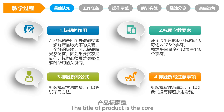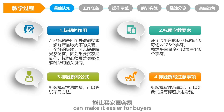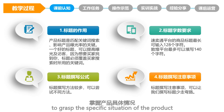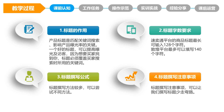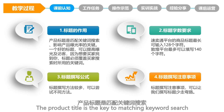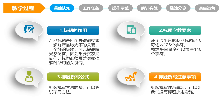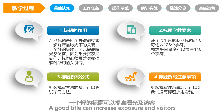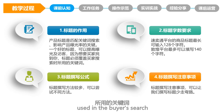The title of products is the core concentration of information content. A title that is articulated and contains key information can make it easier for buyers to grasp the specific situation of the product, thus arousing more interest from buyers. The product title is the key to matching keyword search and affecting product exposure. A good title can increase exposure to visitors, because the title must cover the keywords used in the buyer's search.